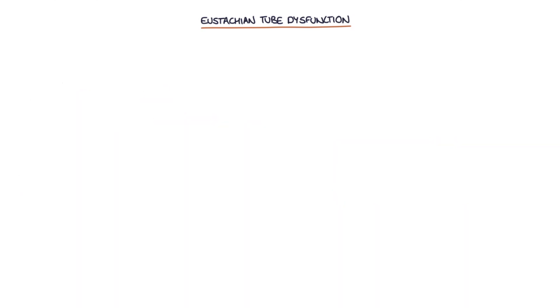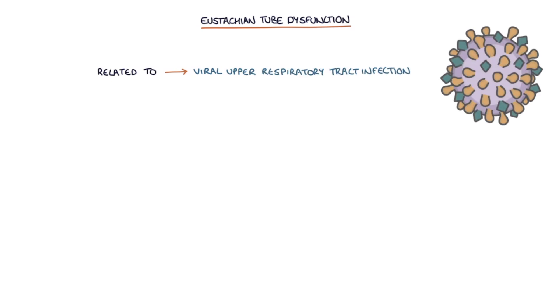Eustachian tube dysfunction may be related to a viral upper respiratory tract infection, to allergies — for example, in hay fever — or to smoking.